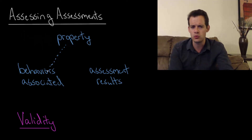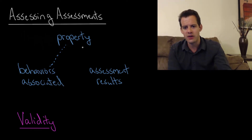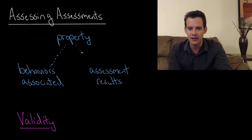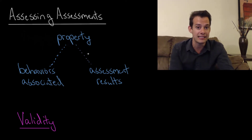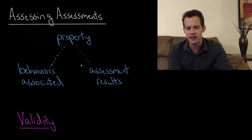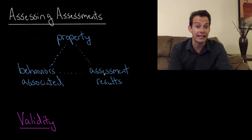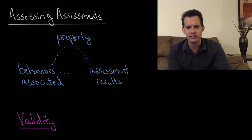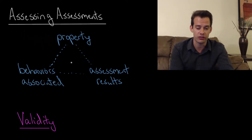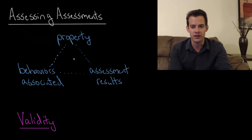In the case of intelligence, associated behaviors might be things like grades in school or job performance — these are things that make us think intelligence exists. And the assessment would be IQ scores on some sort of intelligence test. We think there's a relationship between these behaviors and this property. Some people do well in school, some don't, so maybe there's this thing called intelligence. We then create a test related to that idea, and we want to see a relationship between the behaviors and the assessment results.